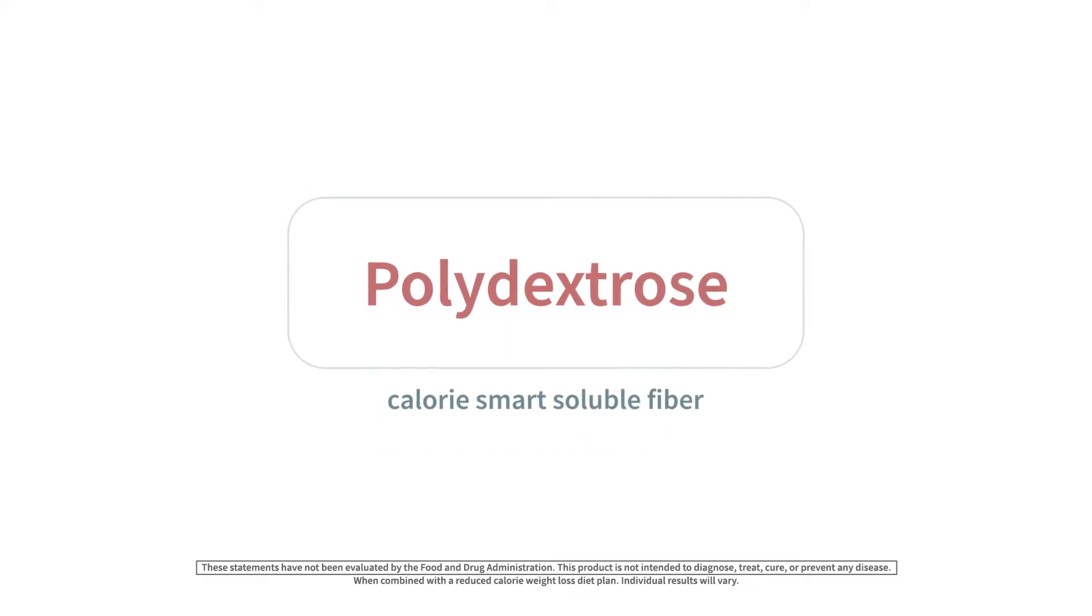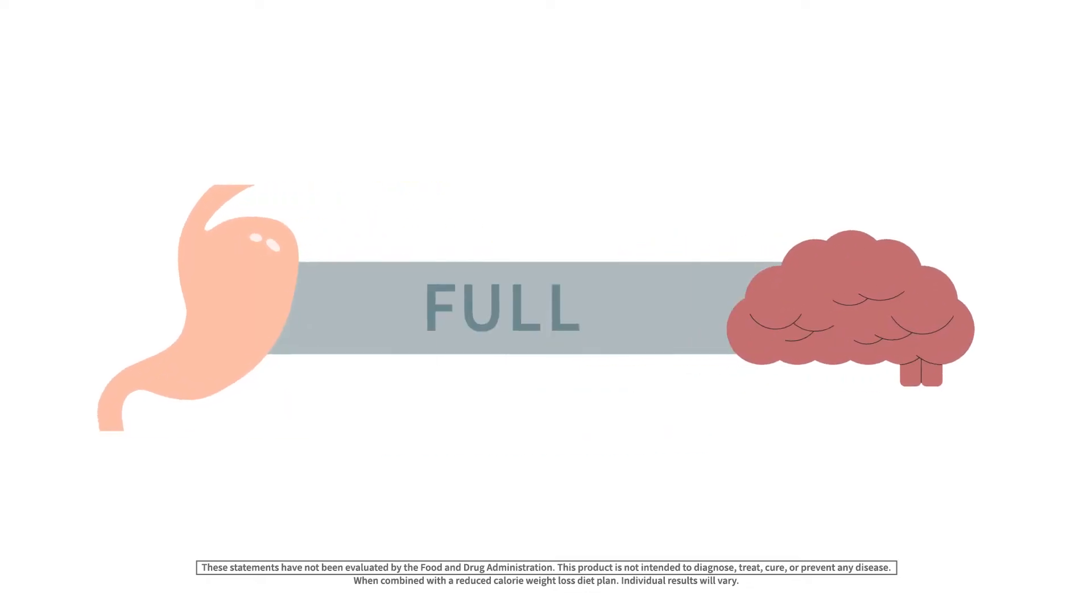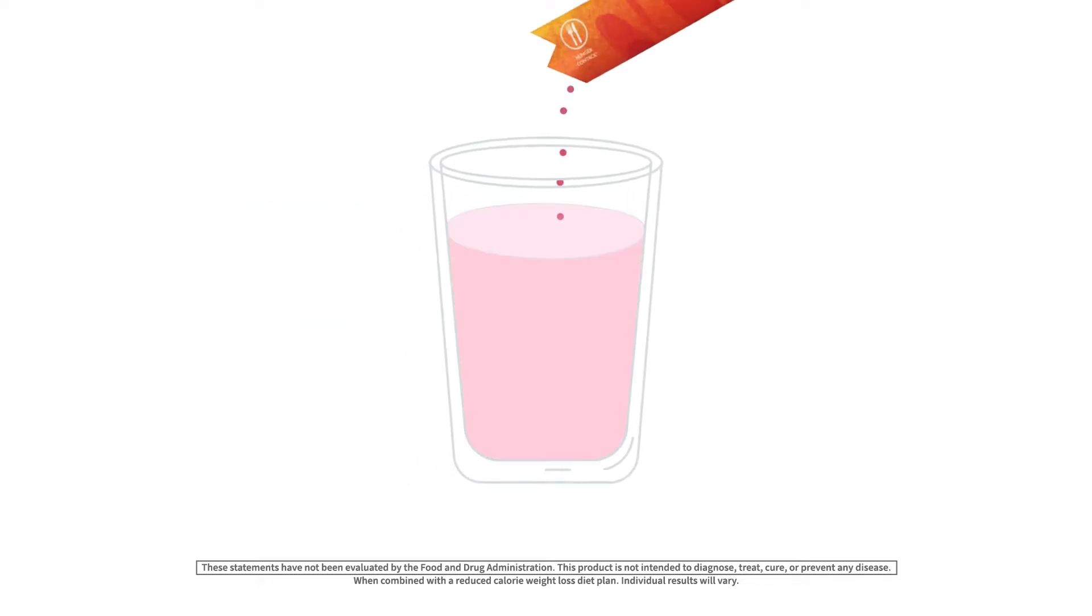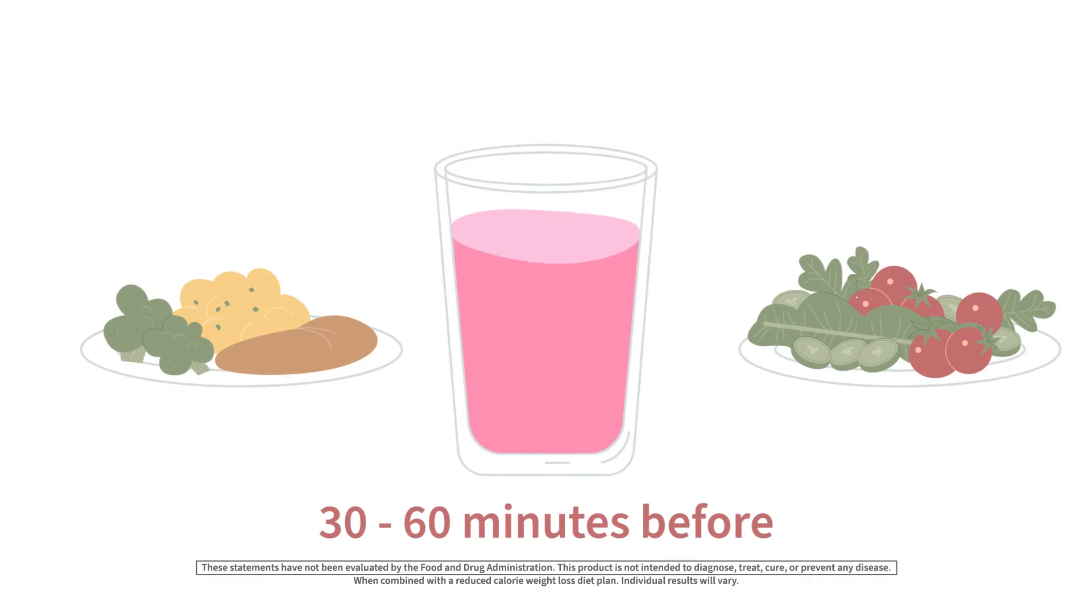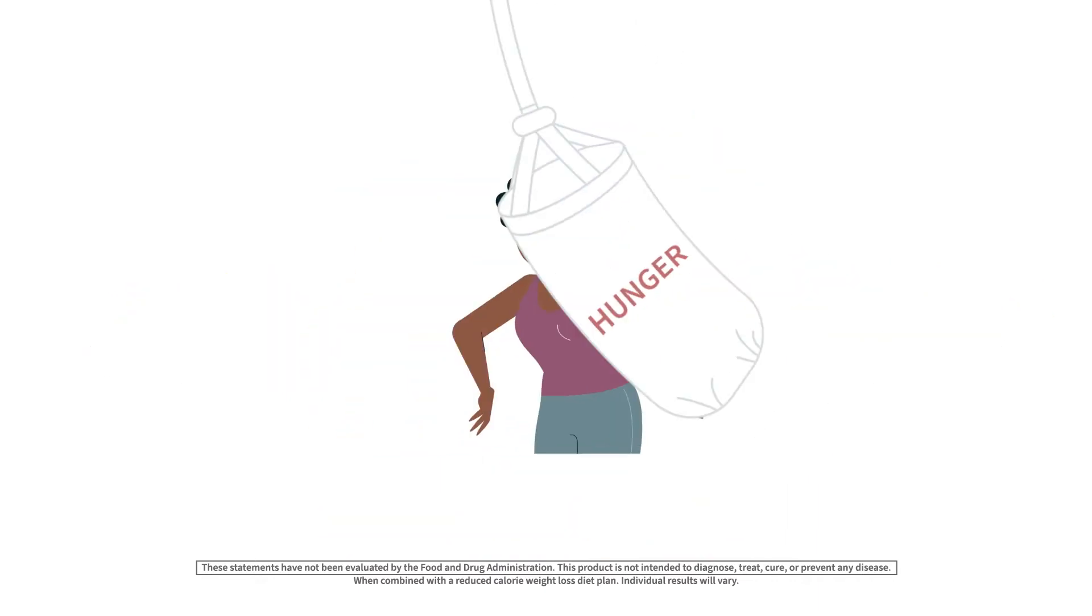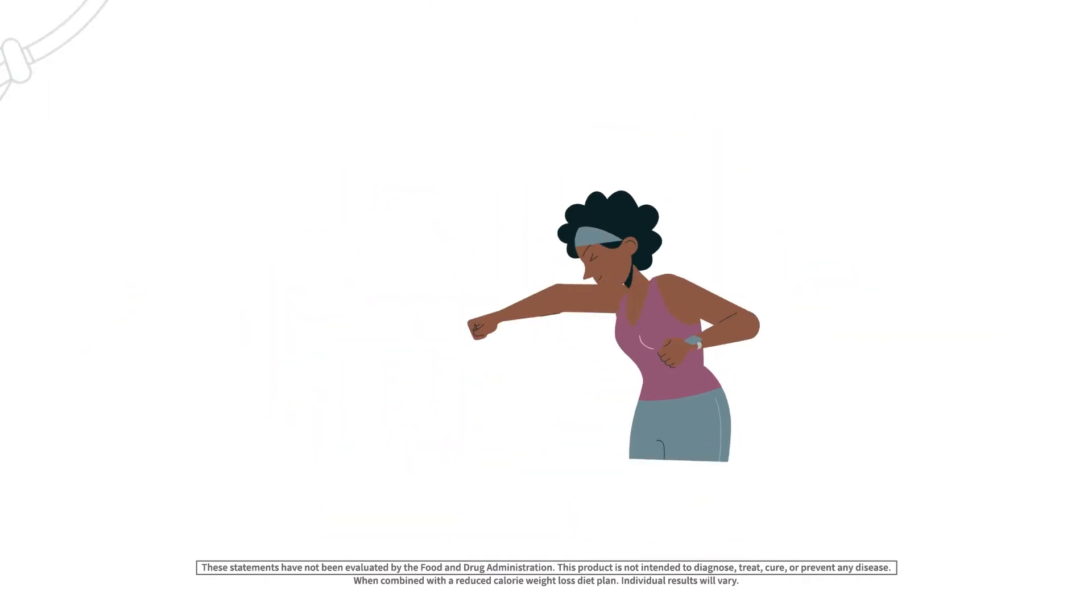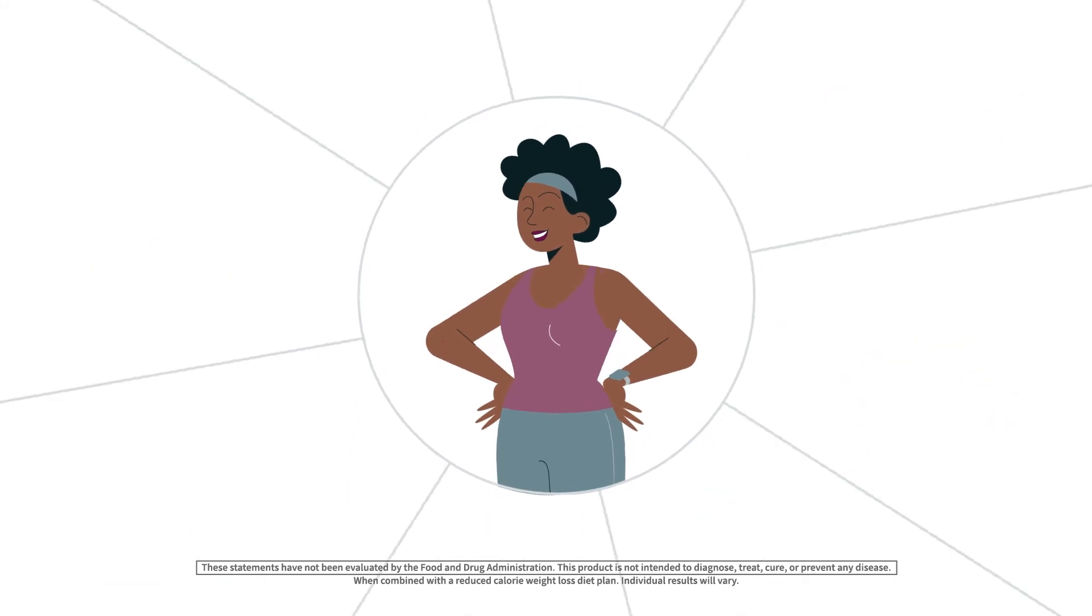Polydextrose is a calorie-smart, soluble fiber which promotes satiety to help you feel fuller longer. Simply mix and enjoy this power-packed drink supplement 30 to 60 minutes before your two largest meals for the support you need to kick hunger to the curb and reduce your desire to overeat.